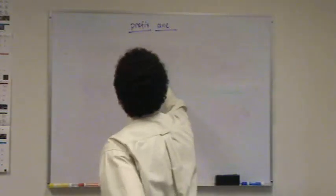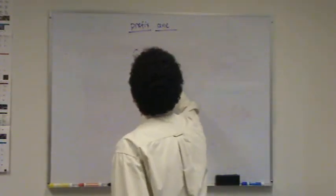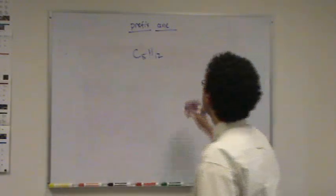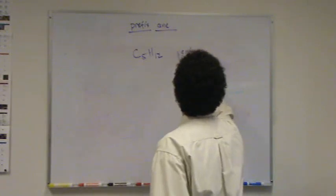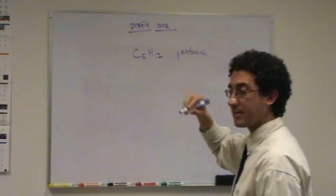So, for example, C5H12. Hexane. Pentane, yeah. Pentane. Hexane is C6.